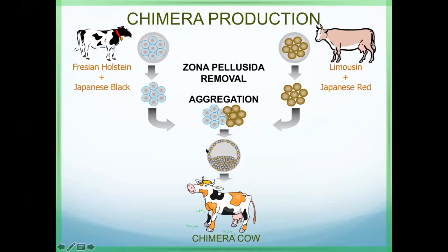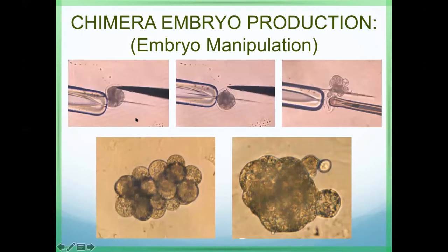After aggregation we get blastocysts with two cell compositions. Another method uses micromanipulation — after we split the embryo we use cells from another embryo and do the aggregation mechanically. After transfer we got calves of three colors: white, brown, and black. These calves actually have four genetic parents from the Japanese Black, Limousine, and Japanese lab strains.